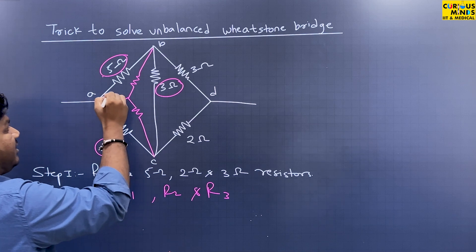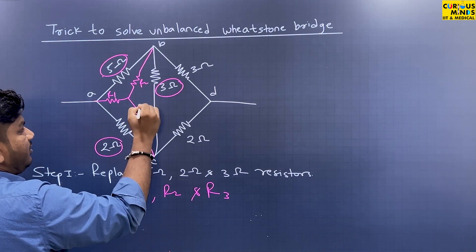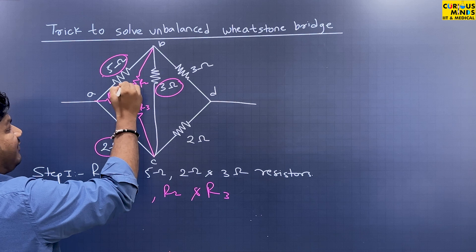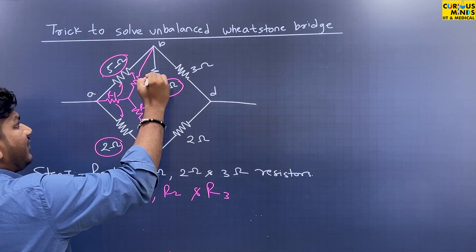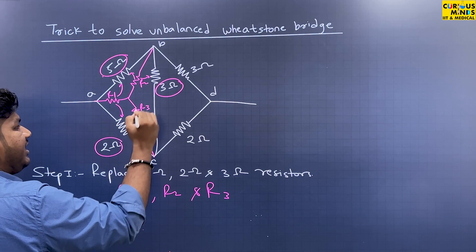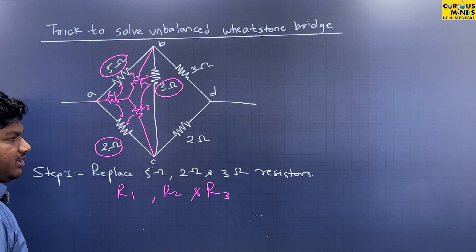So this is our R1, R2, R3. R1's adjacent resistances are 5 and 2. R2's adjacent resistances are 5 and 3, and R3's adjacent resistances are 3 and 2.